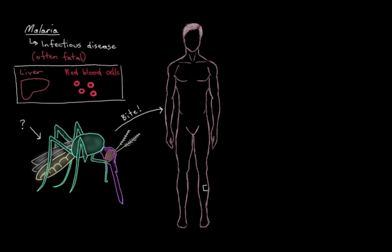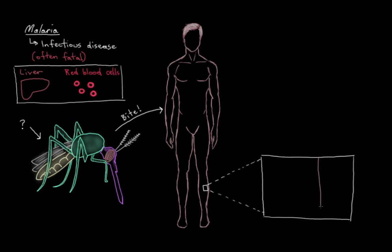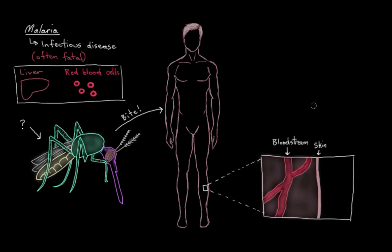But first, let me zoom in here and let's talk about what happens in a mosquito bite. So here's our skin, and we'll say that these are blood vessels under the skin. And here's our blood. And out here is our friendly — well, not so friendly in this case — but our mosquito.